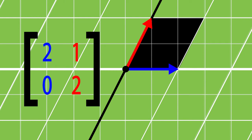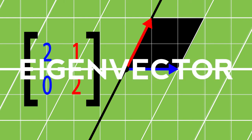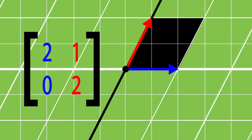You see how this blue vector only got stretched and didn't rotate? This is an eigenvector, and how much it got stretched by is its eigenvalue.